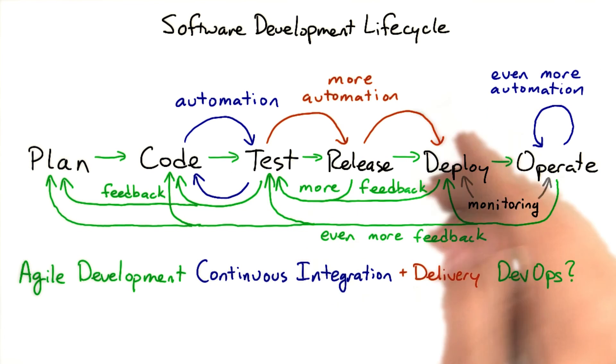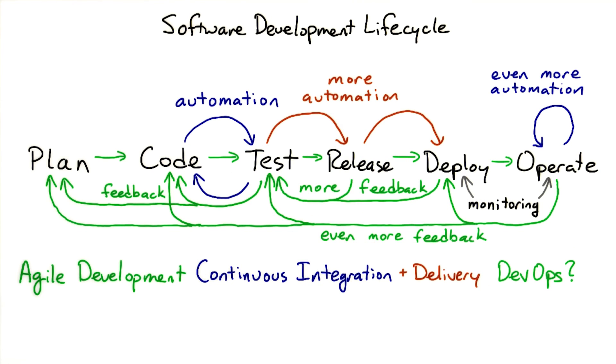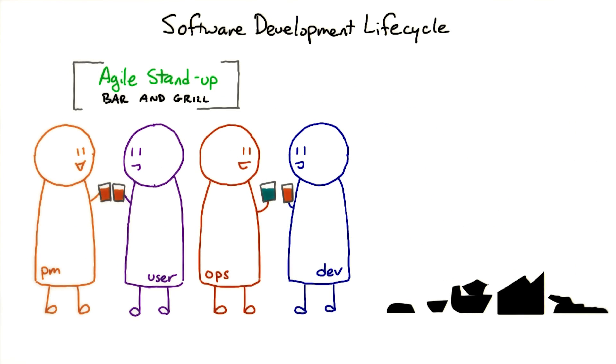Adding automation to the system is good, but it's only when you combine it with the culture of communication and collaboration between teams that you really have the DevOps approach to the software life cycle.